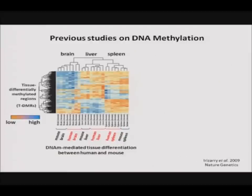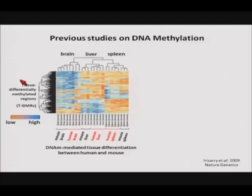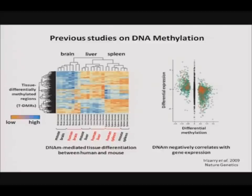Many previous studies have shown that DNA methylation plays an important role in regulating gene expression differences between tissues within an organism. One notable study looked at DNA methylation patterns in the brain, liver, and spleen tissues and then looked at the conservation of these patterns between human and mouse. They found that DNA methylation samples cluster by their tissue classification due to regions called tissue-differentially methylated regions, or TDMRs. Within these regions, samples cluster first by tissue and second by species, and there is a negative correlation such that increased methylation led to lower expression and vice versa.